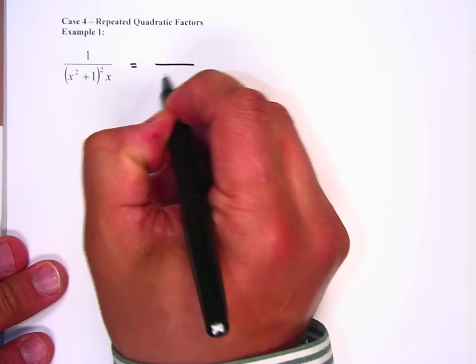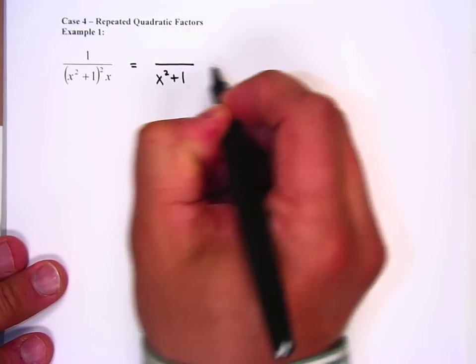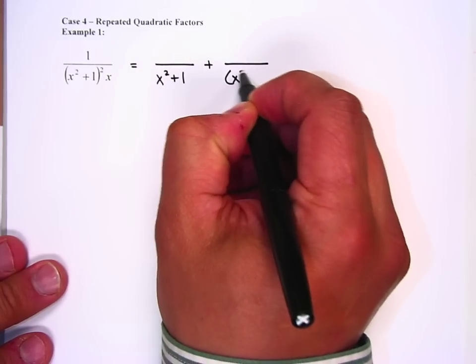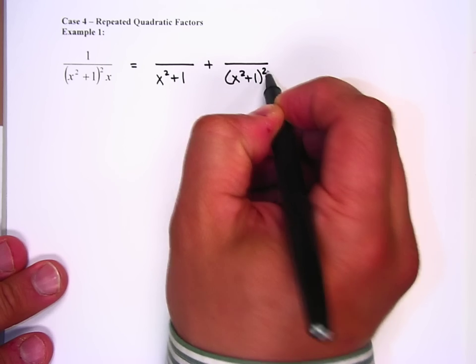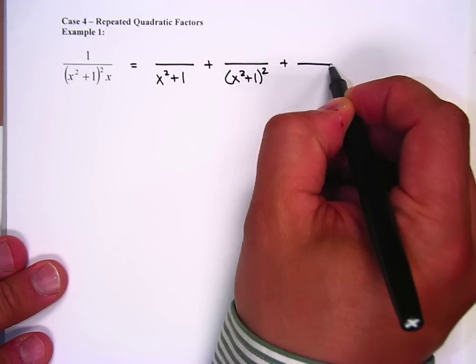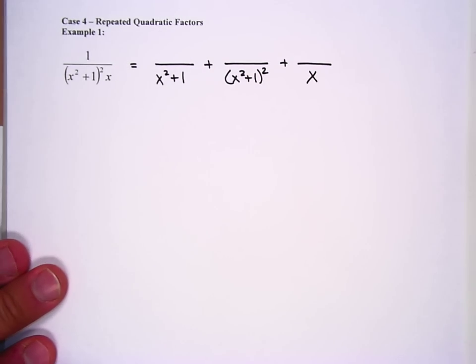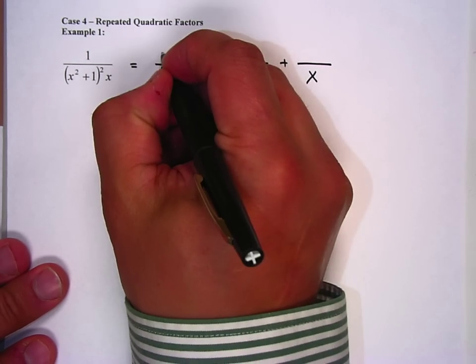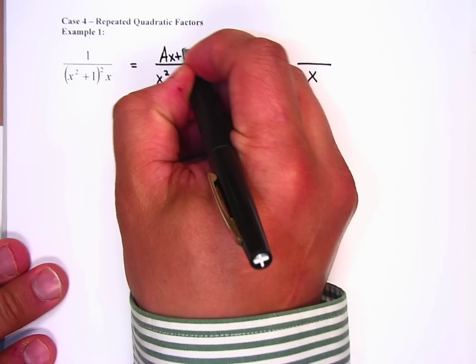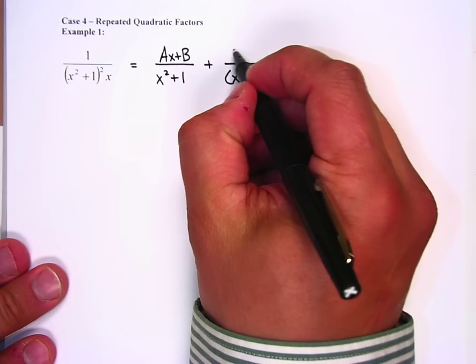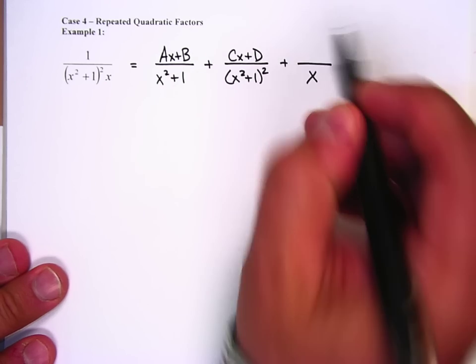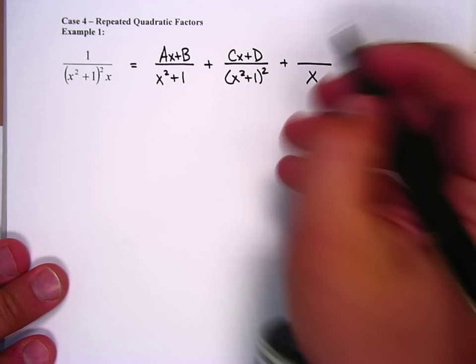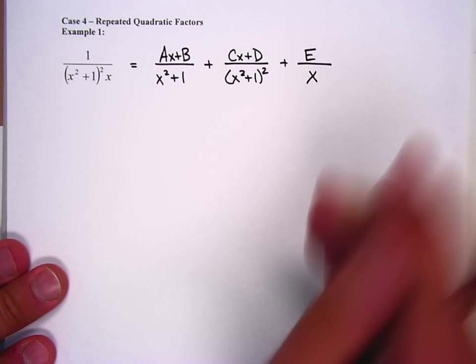We got (x squared plus 1) plus (x squared plus 1) squared plus x. We don't know what goes on top. Because this is a quadratic, we're going to use ax plus b. Because this is a quadratic, we're going to use cx plus d. And because that's a linear, we're just going to use a capital E.